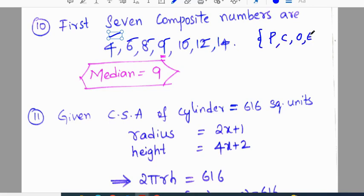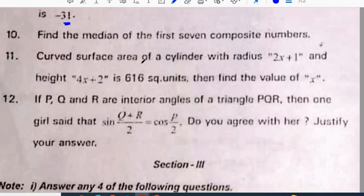First seven composite numbers are 4, 6, 8, 9, 10, 12, 14. Students you have to know prime numbers, composite numbers, odd numbers, even numbers, square numbers, cube numbers perfectly. Median is nothing but the mid value, so mid value of this is 9. So median is 9. Make sure that the numbers are arranged in ascending order.